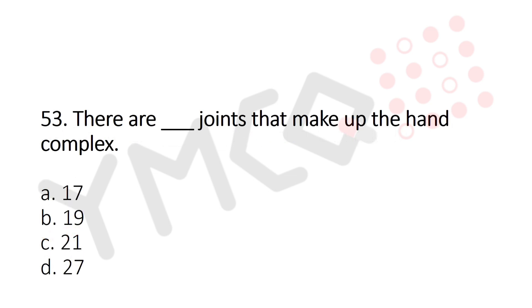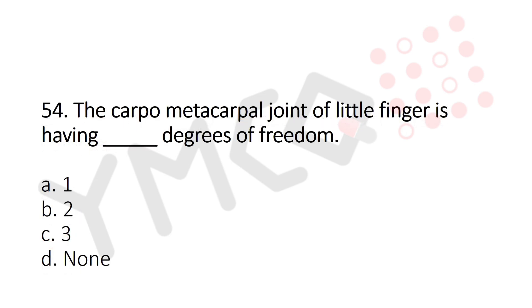Question 53: There are how many joints that make up the hand complex? Option A: 17, Option B: 19, Option C: 21, Option D: 27. The answer is Option C, 21.